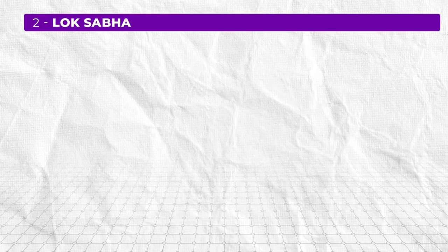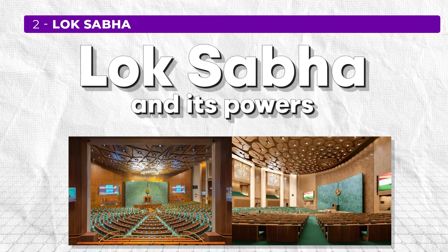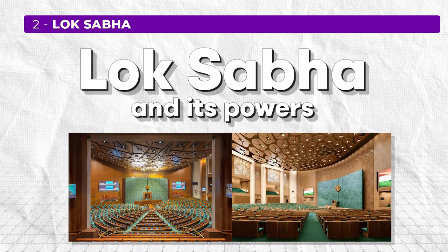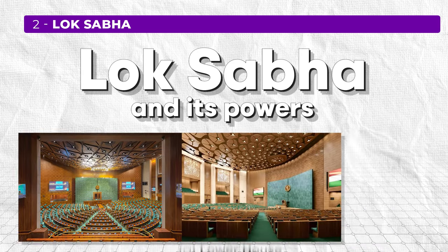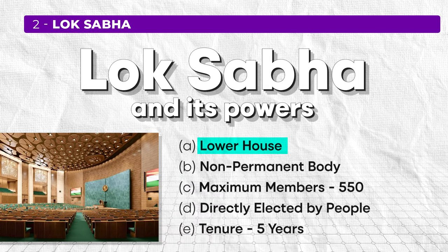Moving on to the second important topic in this unit for UGC Net Paper 1 exam — Lok Sabha and its powers. The Lok Sabha is called the lower house of parliament. Rajya Sabha is the upper house, and unlike Rajya Sabha, Lok Sabha is not permanent. So these are two major differences.